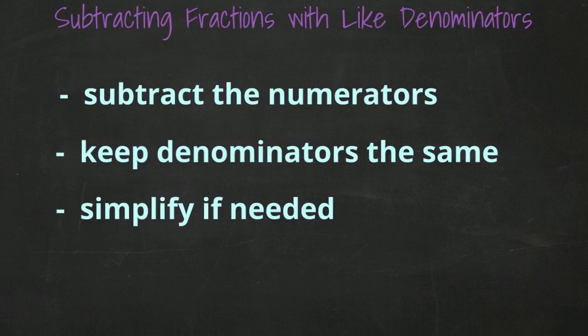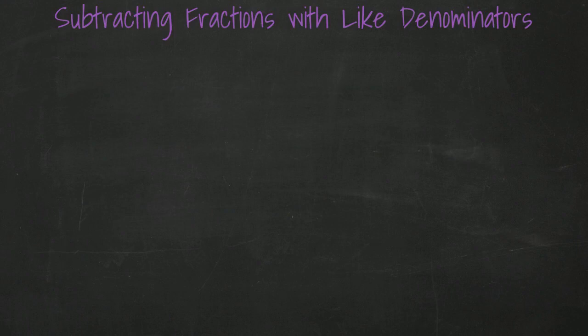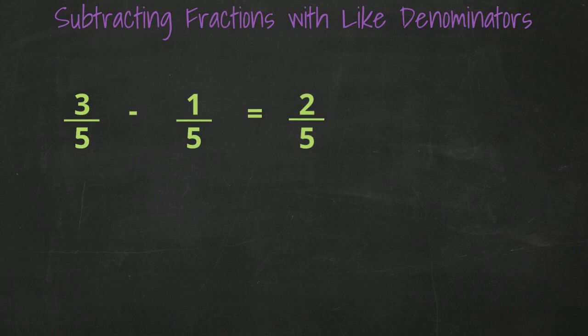Let's go over a few quick examples. 3 over 5 minus 1 over 5. We keep the denominator of 5 the same, and we subtract 3 minus 1 to get 2. 2 over 5 is in its simplest form, so we're done.